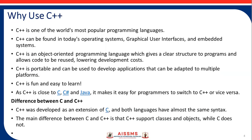Why use C++? C++ is one of the world's most popular programming languages. It is an object-oriented programming language. C++ can be found in today's operating systems, graphical user interfaces, and embedded systems. C++ is portable and can be used to develop applications adapted to multiple platforms. As C++ is close to C, C#, and Java, it makes it easy for programmers to switch to C++ or vice versa.